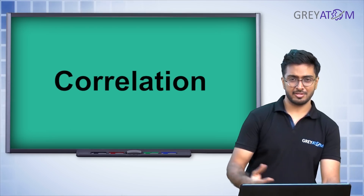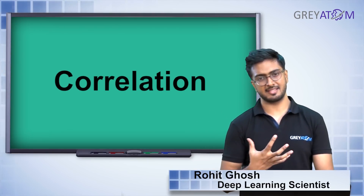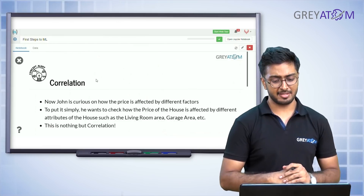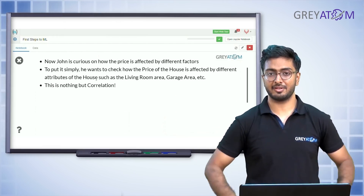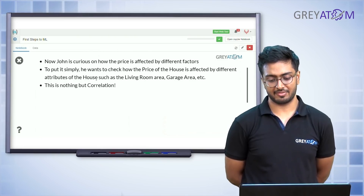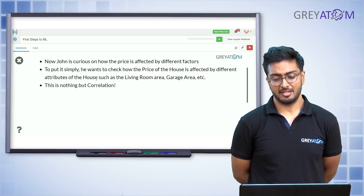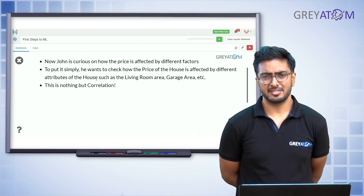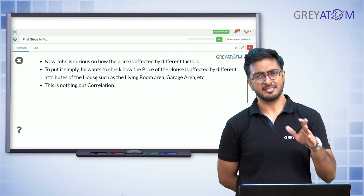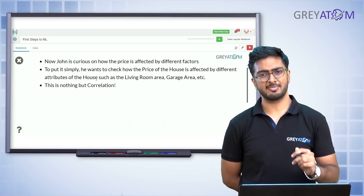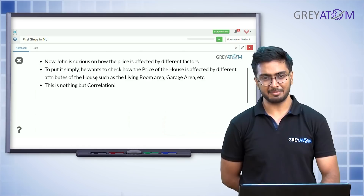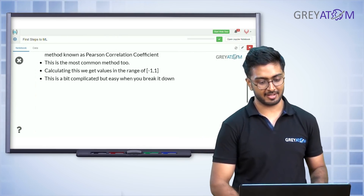The last concept in this lecture is called correlation. John is curious about how house prices are affected by different factors — like living room area and garage area. These attributes should be related to the sales price, so we want to measure how strongly they are correlated.